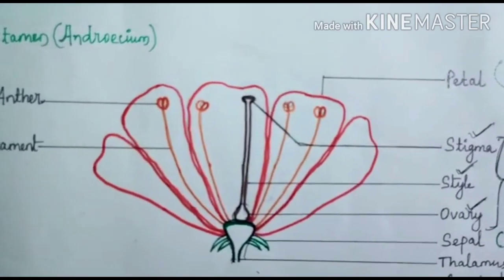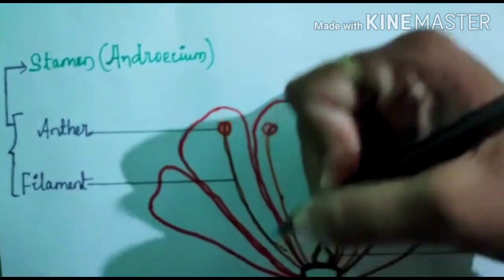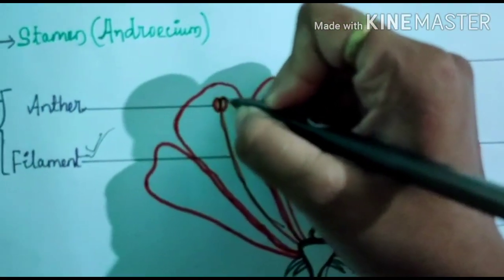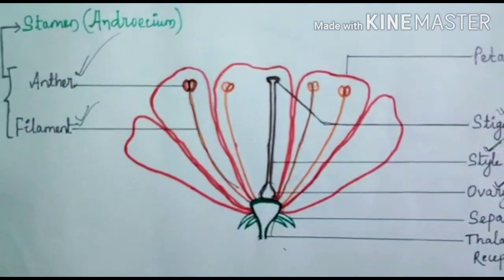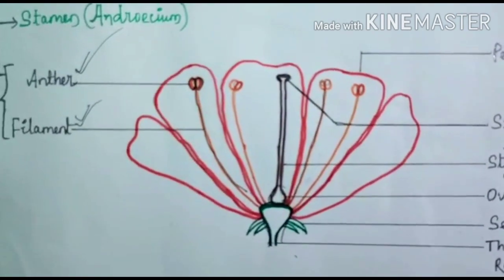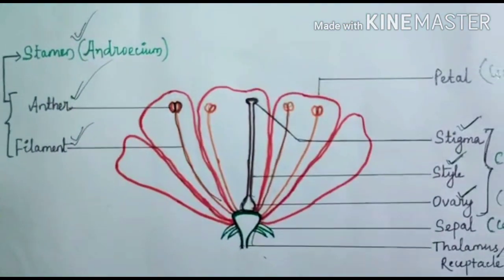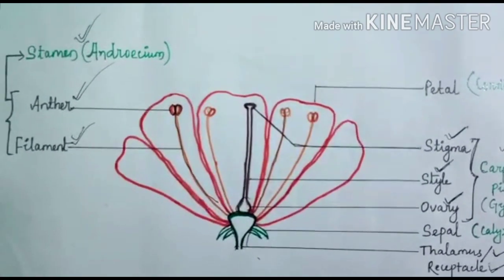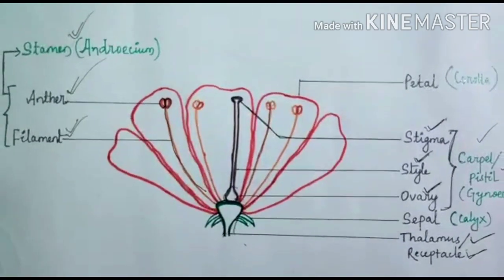Next to the gynoecium there is a long thread-like structure called the filament. At the apex there is a bulb-like structure called the anther. The anther and filament together constitute the stamen. All the stamens together are called the androecium, which is the male reproductive part. So androecium is the male reproductive unit, whose individual part is called the stamen.